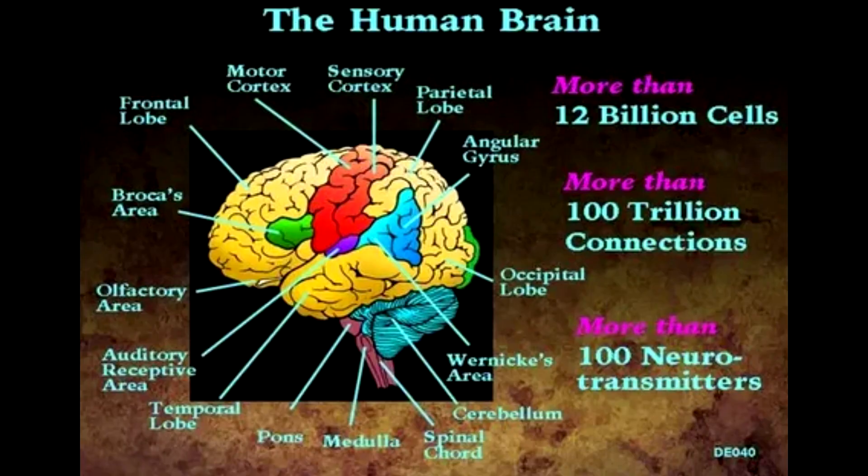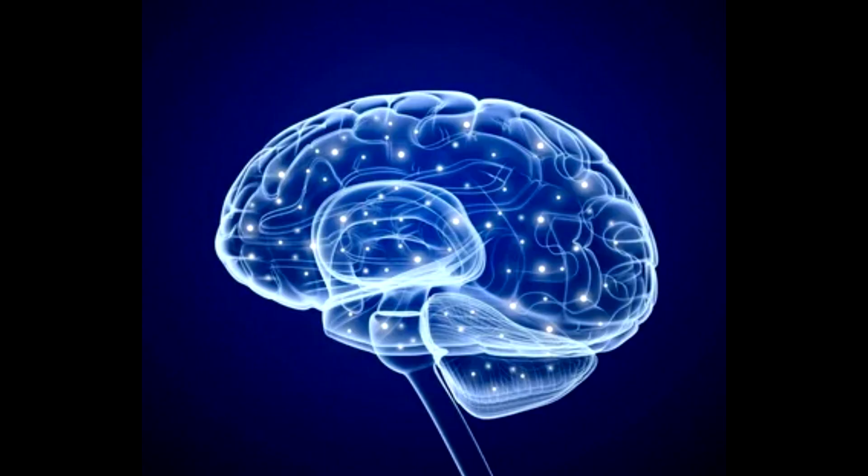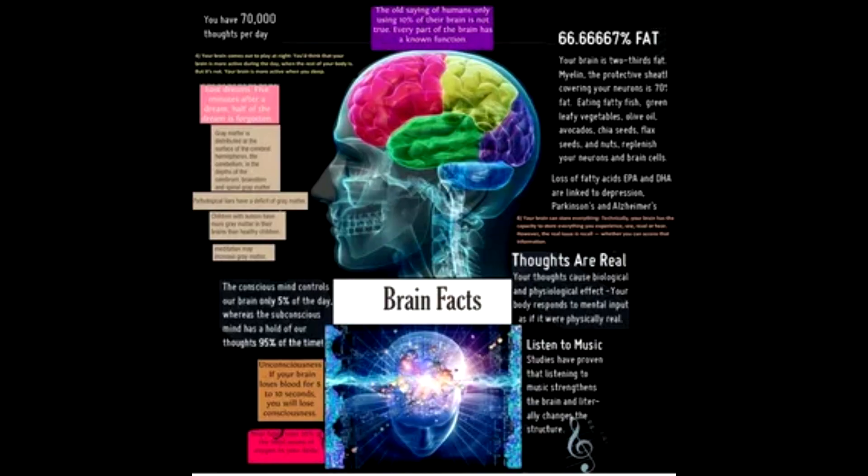Rather than carrying out these procedures by hand, the researchers designed robots to work efficiently through the samples. The robots have inspected more than 10 million human brain cells so far, Dr. Lein estimated.